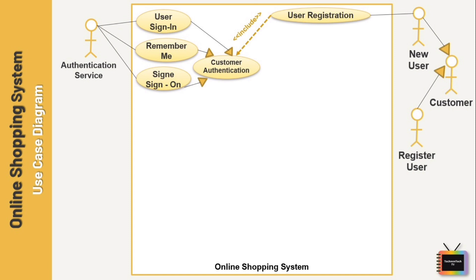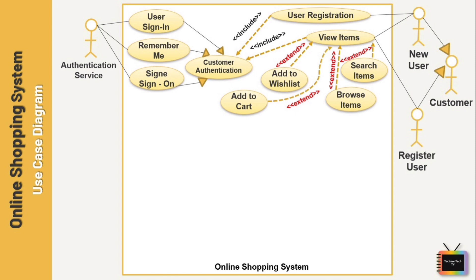Both new users and registered users can view items on the online shopping system. For this also we require authentication, so I have added an include relation from View Items to the Customer Authentication use case. View Items is extended by several optional use cases — the customer may search for items, browse catalogs, and add items to a shopping cart or wish list. These are extending use cases because they provide optional functions allowing the customer to find items. We use extend relation when the use case is optional and comes after the base use case.